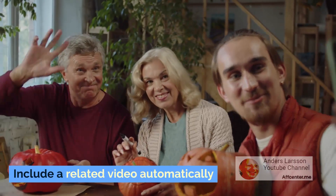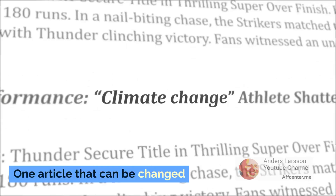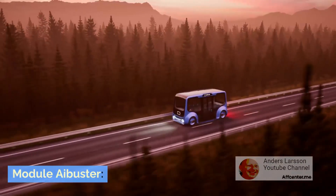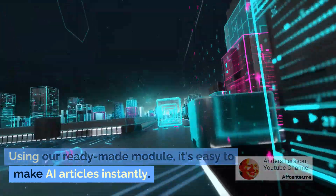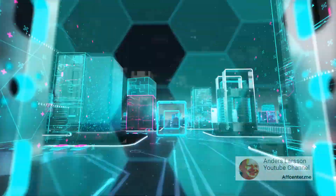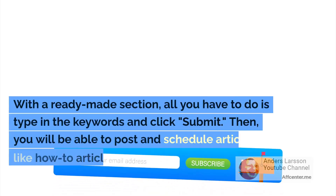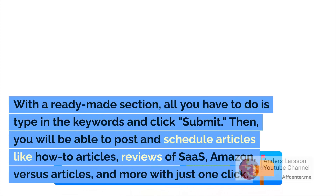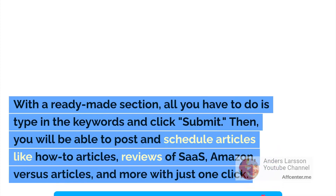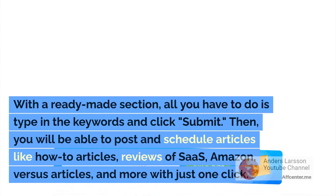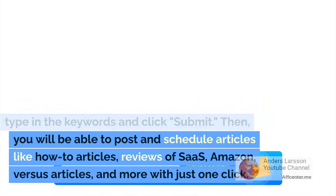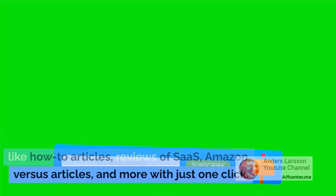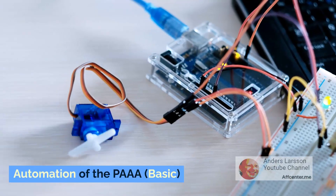Automatically include a related video. One article that can be changed. Using our ready-made module, it's easy to make AI articles instantly. With a ready-made section, all you have to do is type in the keywords and click submit. Then you will be able to post and schedule articles like how-to articles, reviews of SaaS, Amazon, versus articles and more with just one click.